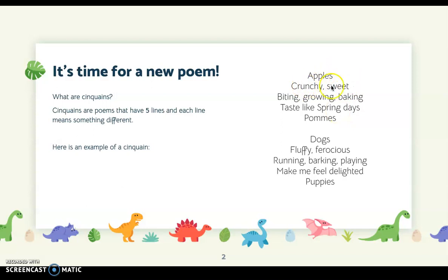This example says: apples, crunchy, sweet, biting, growing, baking, tastes like spring days, palms. That last word — you don't need to use that word. I used it because I couldn't find another synonym for apples, so that is the French word for apples.